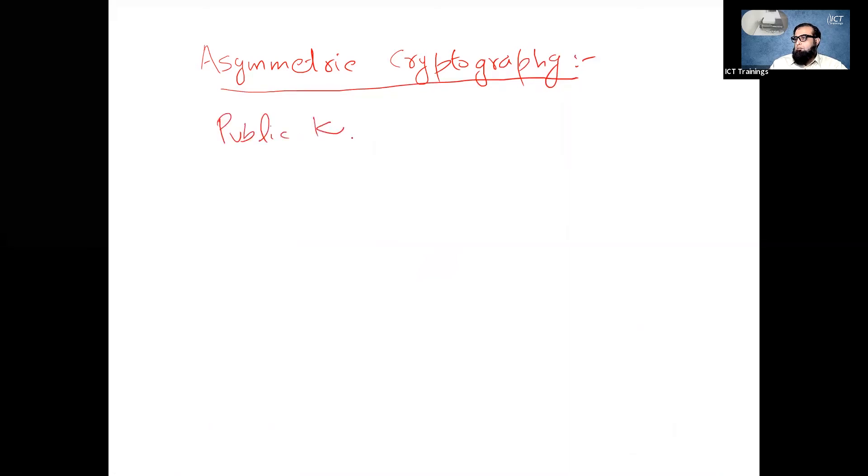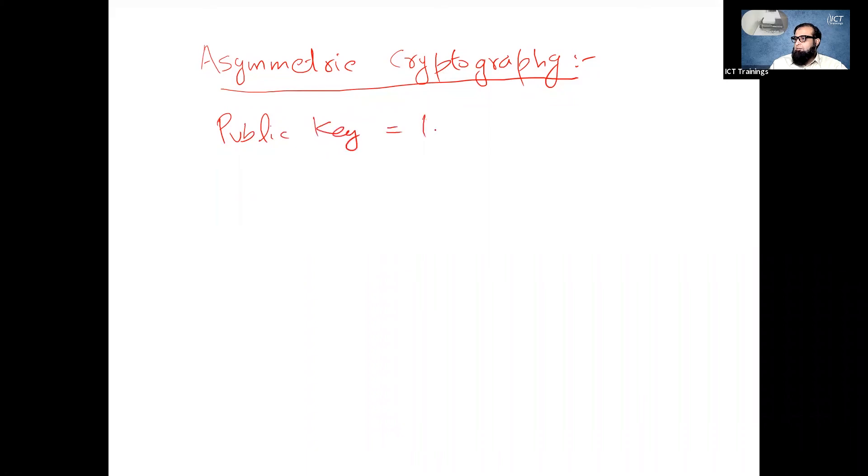So asymmetric cryptography we have a public key which is let's say PB and we have a private key which is PR. What is the public key? What is the use of public key?